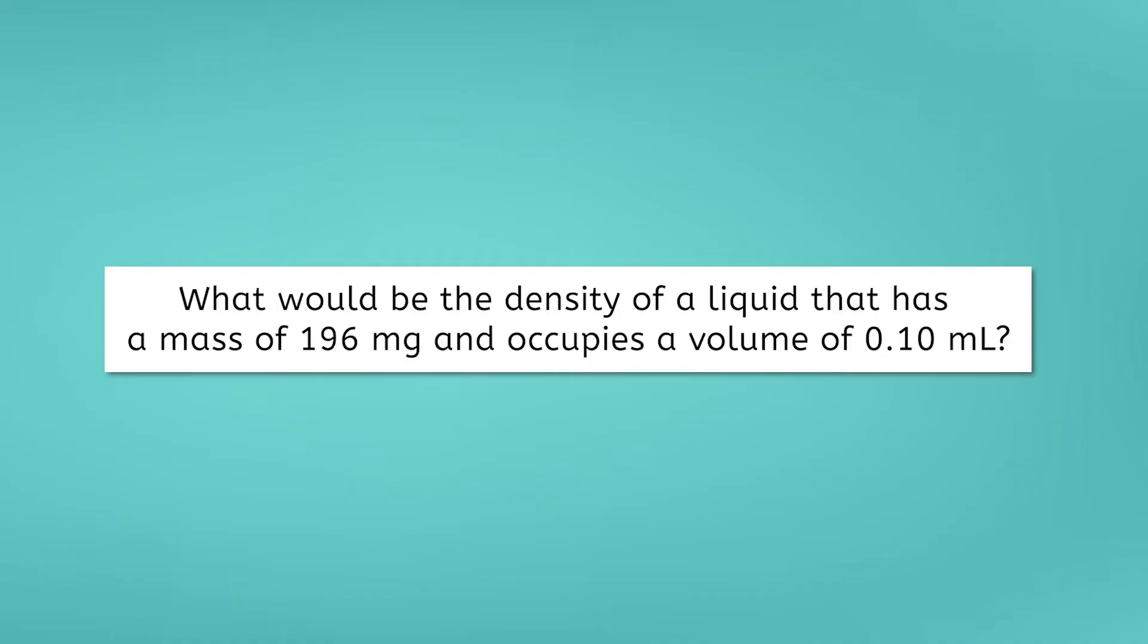We are going to try one more example. After this, you will have more practice problems to try on your own in the lesson PDF. If you get stuck, you can always come back and re-watch this video to help you work through the steps of the practice problems. Our final example of this video asks, What would be the density of a liquid that has a mass of 196 milligrams and occupies a volume of 0.10 milliliters?